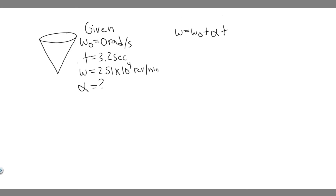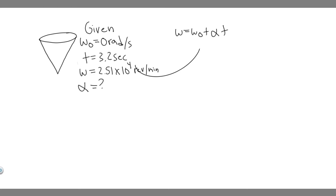When we plug in numbers, we need to make sure they're in the correct units. The angular velocity must be in radians per second. Notice the given value is in revolutions per minute, but it needs to be in radians per second, because our time is in seconds and alpha will be in radians per second squared. So first we have to convert this.